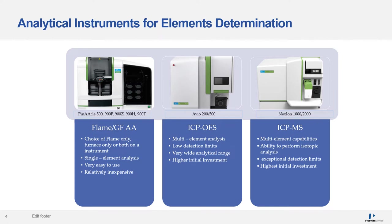The PerkinElmer AVIO series ICP-OES offers dual plasma view for effective measurement of major and minor elements in the same method, from ppb to ppm ranges. The patented flat plate plasma technology allows for lower gas consumption, and either a simultaneous or fast sequential unit is available. The NexION series ICP-MS offers a unique level of sensitivity down to ppt levels, an extended dynamic range of 11 orders of magnitude, and a universal cell for interference removal.